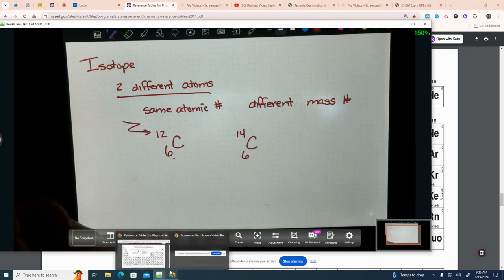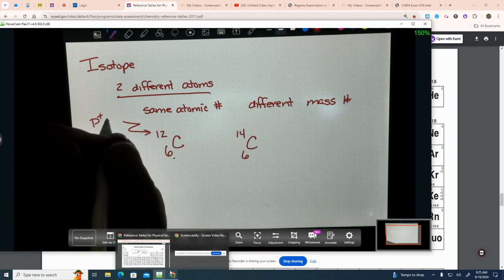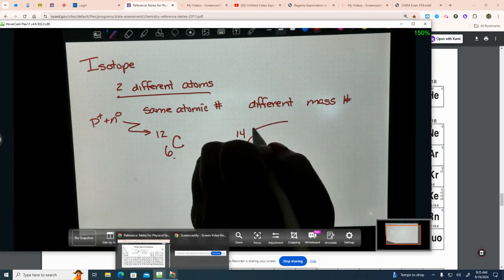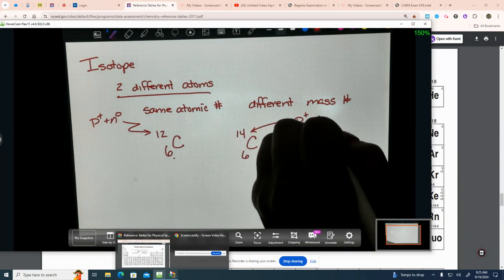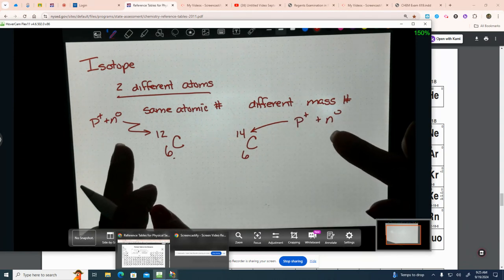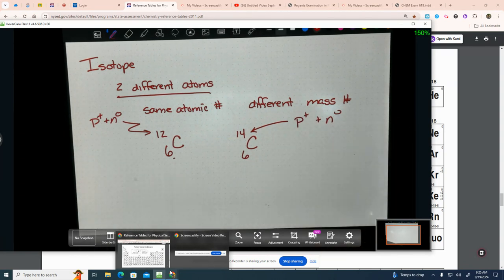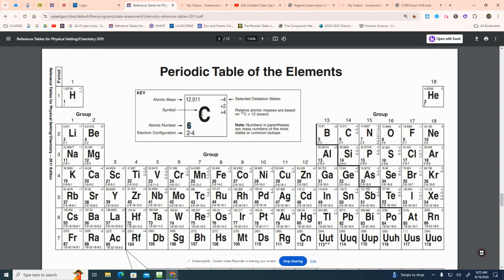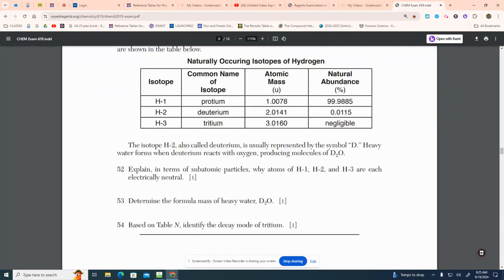This mass number is equal to the protons plus the neutrons. This number up here is protons plus neutrons. They have different mass numbers, but the same atomic number. That's what an isotope is.